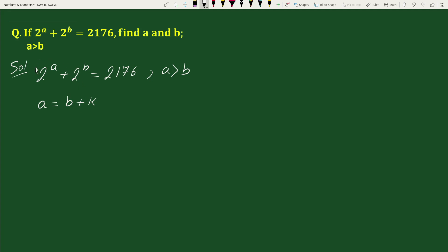Now we can write the given equation as 2 to the power b plus k plus 2 to the power b equals to 2176. Now here in these two terms, common factor is 2 to the power b. So taking out common factor from these two terms,